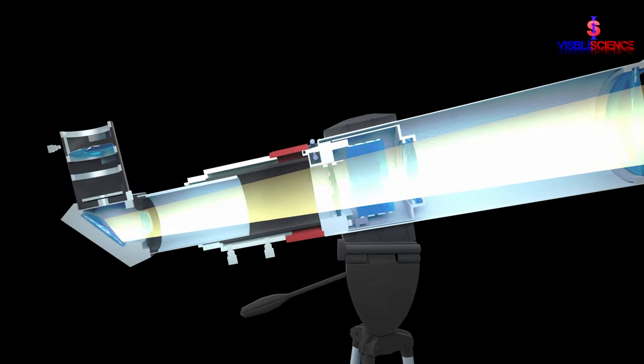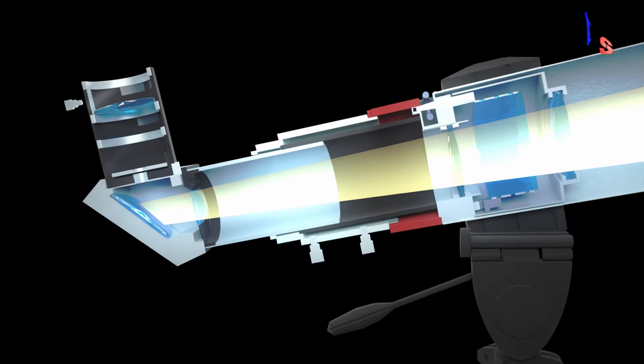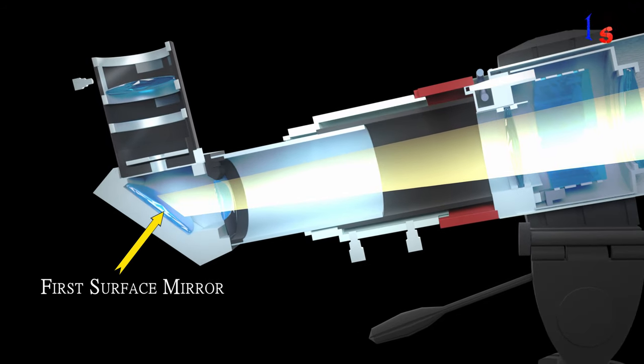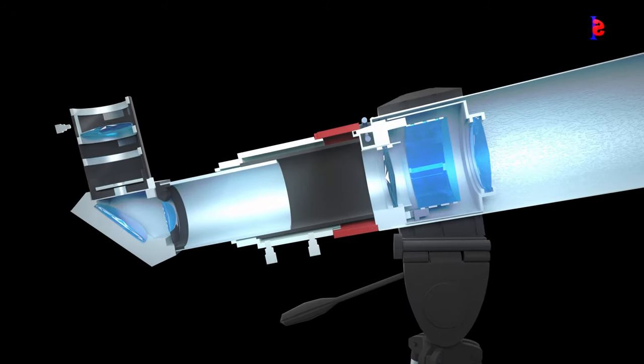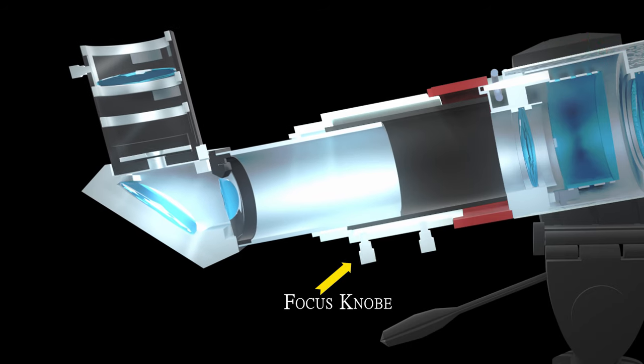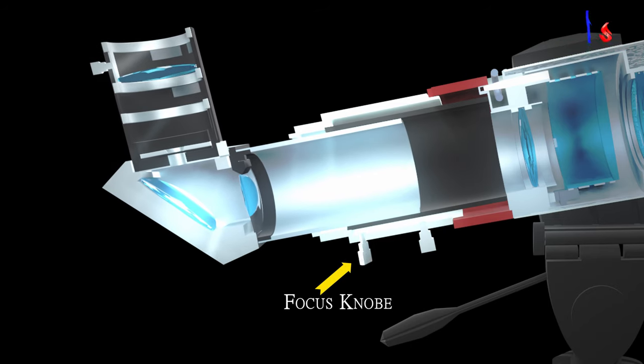Light is refocused and incident on first surface mirror. If the light is not focused on surface mirror, then the focal length is adjusted with the help of the focus knob.